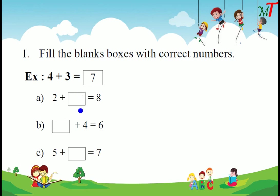Next: dash plus 4 equals 6. 4 means 1, 2, 3, 4. We add up to 6, so 5 and 6. How many dots did we add? Only 2. So 2 plus 4 equals 6.